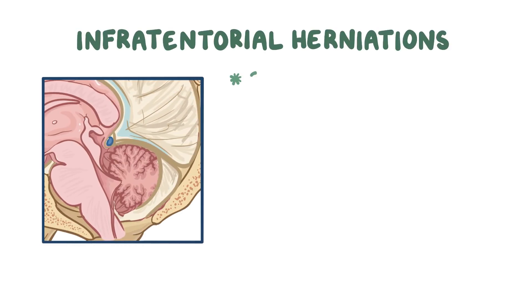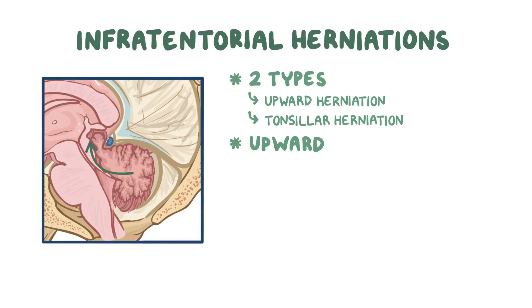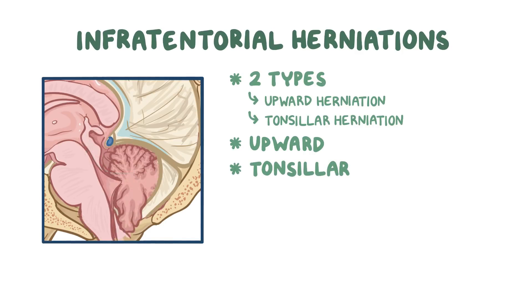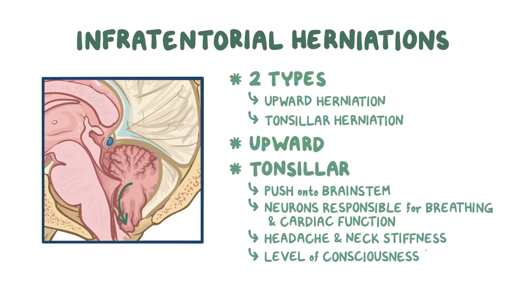The other category is infratentorial herniations, with two types: upward herniation and tonsillar herniation. In upward herniation, there is a displacement of the cerebellum upward through a notch in the tentorium cerebelli. In tonsillar herniation, parts of the cerebellum called cerebellar tonsils slip down through an opening in the skull called the foramen magnum. This is particularly dangerous because the displaced cerebellum can push onto the brain stem and affect neurons responsible for breathing and cardiac function. The most common signs are headache and neck stiffness, and decreased consciousness may give rise to flaccid paralysis.